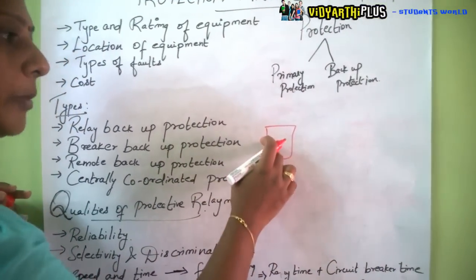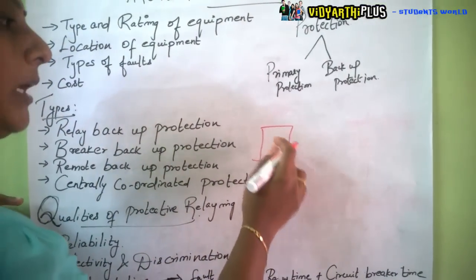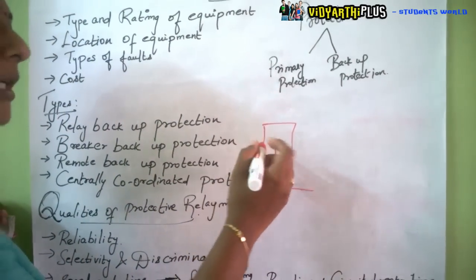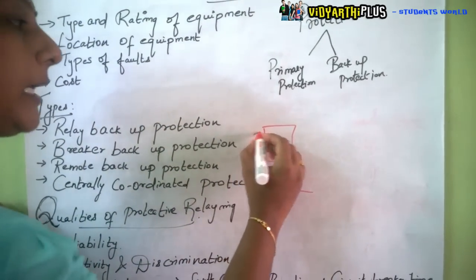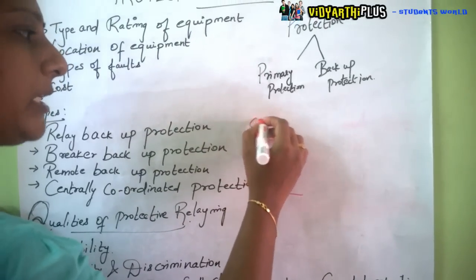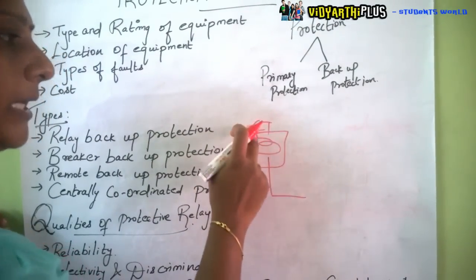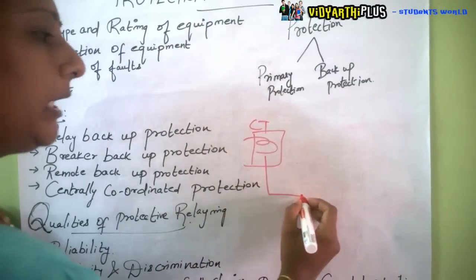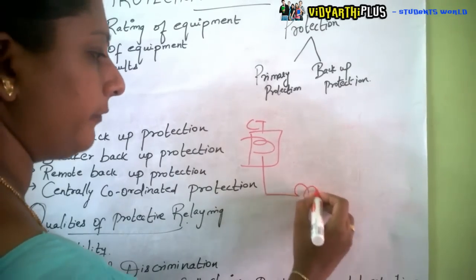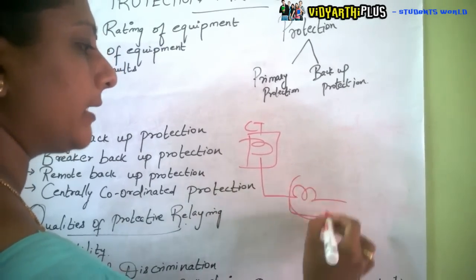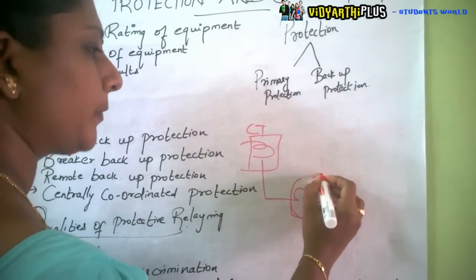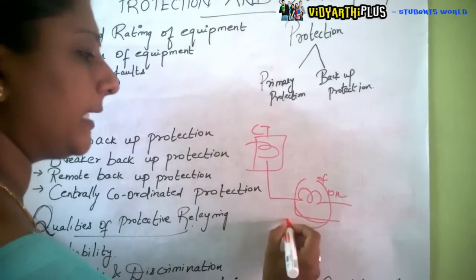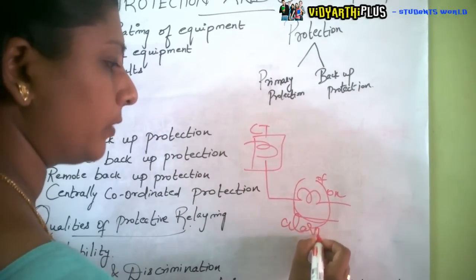Under fault condition the current will go high, and the current is being sensed by a current transformer. If the current is high, the current transformer will immediately give information to the relay, where the relay goes from off to on position. Immediately the relay senses and it gives an alarm sound.